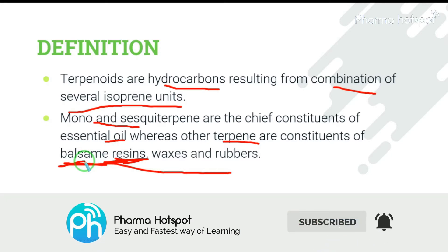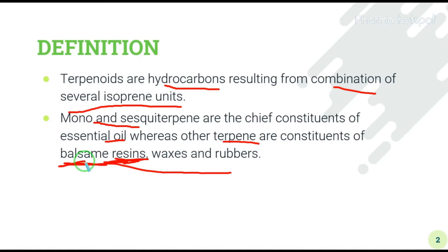Balsam is again a resin, but it has aromaticity — it is an aromatic resinous substance that the plant releases. It is very important that balsam contains a high concentration of benzoic acid and cinnamic acid, and it is mainly used for medicinal purposes.